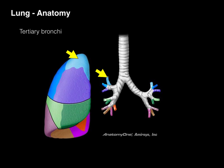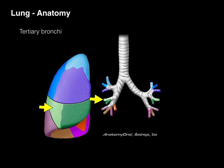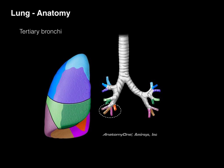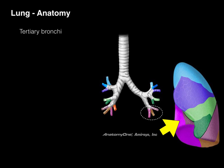The secondary bronchi divide into tertiary bronchi, also known as segmental bronchi. Each tertiary bronchus supplies a distinct segment of a lobe. These regions are called bronchopulmonary segments — regions of a lobe supplied by only one tertiary bronchus. A bronchopulmonary segment is a very discrete region of lung where vessels and airways can be surgically isolated and removed. The color coding here shows how the tertiary bronchi match up with their associated segments of each lobe.